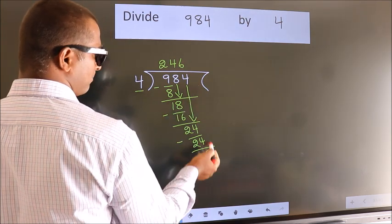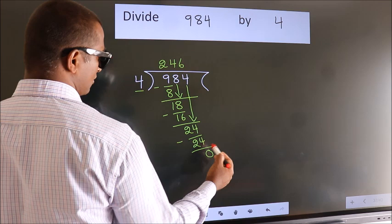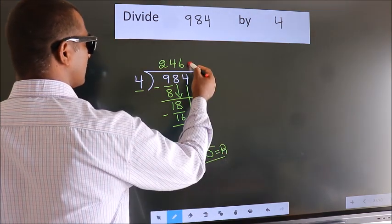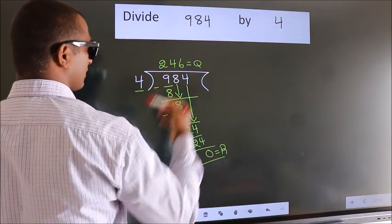No more numbers to bring it down. So we stop here. This is our remainder. This is our quotient. We get 246.